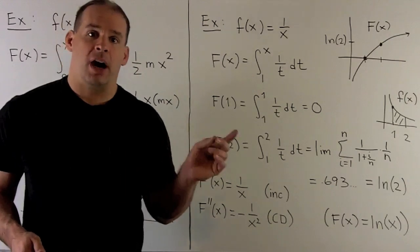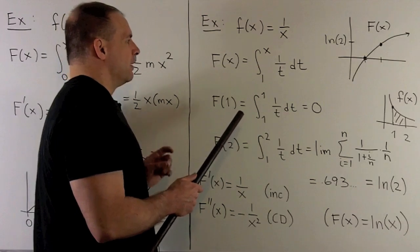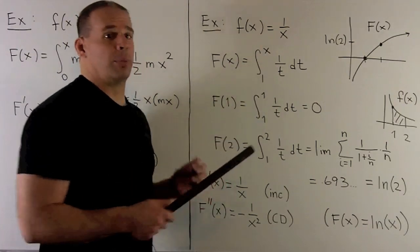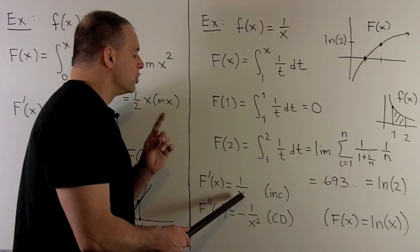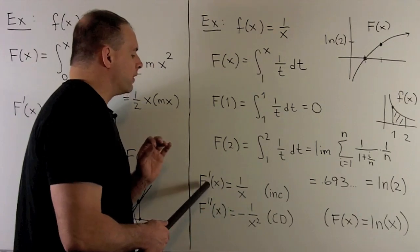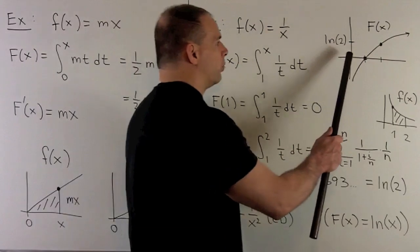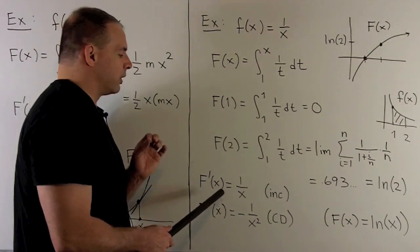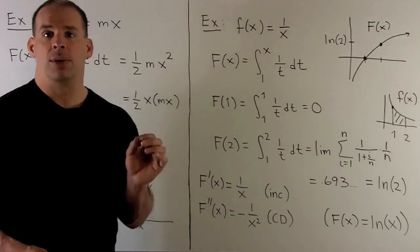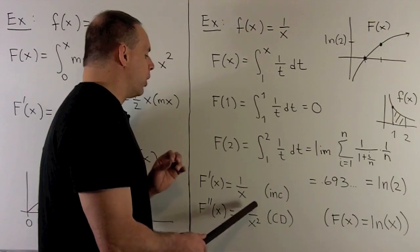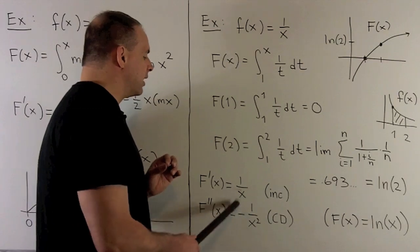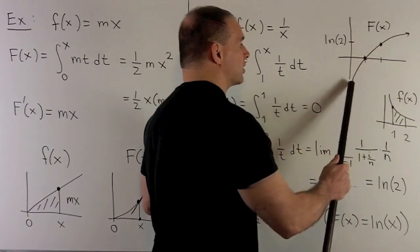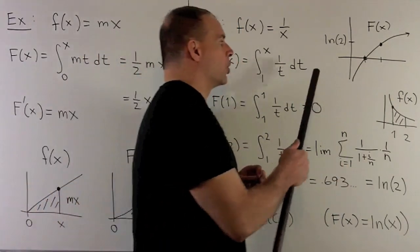Other things we can get: taking the derivative, the rule says if you have x in the upper limit, just take the integrand and replace t with x — so the first derivative of capital F is 1/x. When x is greater than 0, the derivative is always positive, meaning we're increasing on that region. For concavity, the derivative of capital F prime is the derivative of x to the minus 1, giving minus x to the minus 2, or minus 1 over x squared. When x is positive, x squared is positive, so putting a negative in front makes it always negative — we're concave down. So the function is increasing and concave down, consistent with the graph of natural log of x.